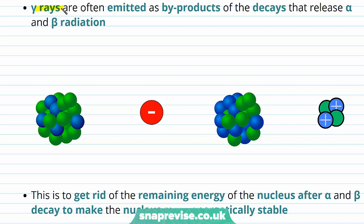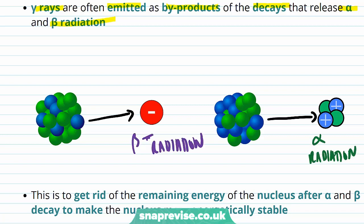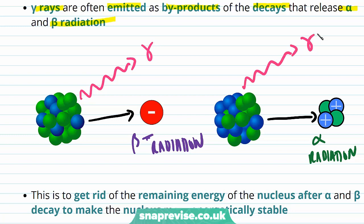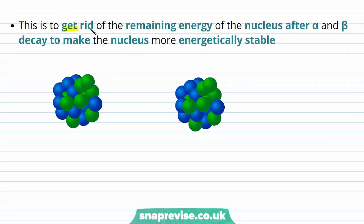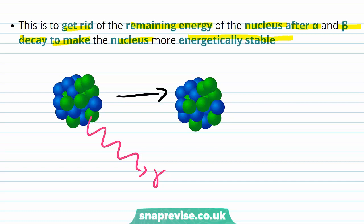Gamma rays are often emitted as byproducts of the decays that release alpha and beta radiation. This is to get rid of the remaining energy of the nucleus after alpha and beta decay, to make the nucleus more energetically stable. So after a nucleus emits a gamma ray, it becomes more energetically stable because it has a lower energy.